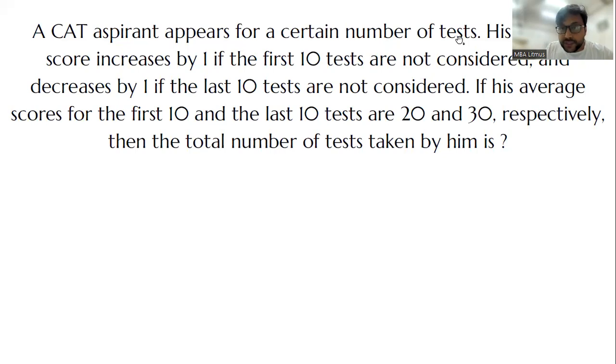All right, let me read this question for you. A CAT aspirant appears for a test. His average score increases by 1 if the first 10 tests are not considered and decreases by 1 if the last 10 tests are not considered. If his average score for the first 10 and the last 10 are 20 and 30 respectively, find the total number of tests taken by him.